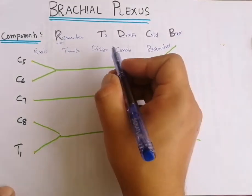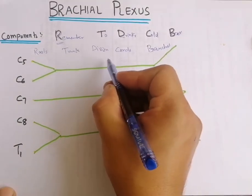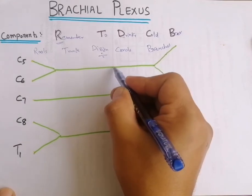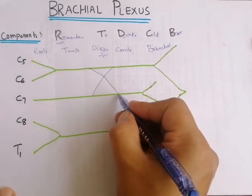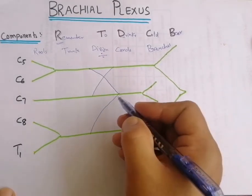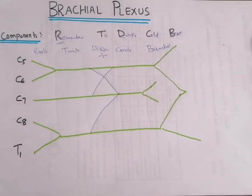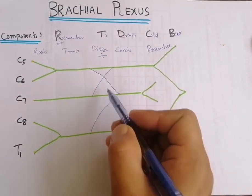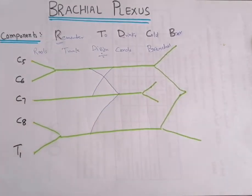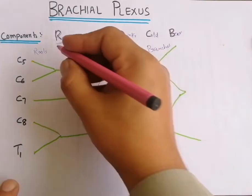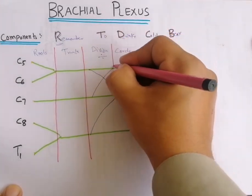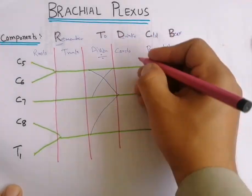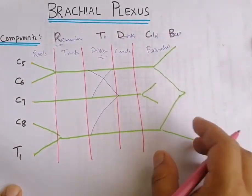The Division portion is related to mathematics, so write a multiplication sign (cross) and a slash below the division section of the diagram. These symbols mark the division portion of the brachial plexus, distinguishing roots, trunks, divisions, cords, and terminal branches.